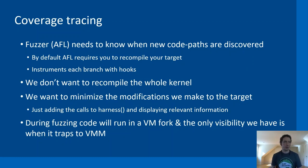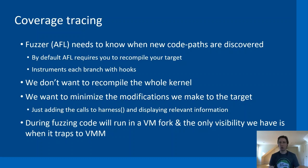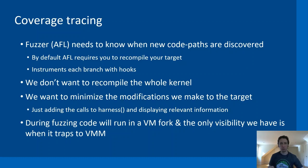Coverage tracing for fuzzers means the fuzzer needs to know if an input has opened up new code paths, so it can tune mutations to smartly exercise new regions of code. All basic blocks and branches need to be instrumented. We don't actually want to recompile the kernel — with AFL normally you'd use a special CLANG version to compile in hooks, but we want to collect coverage trace information without recompiling the entire kernel.